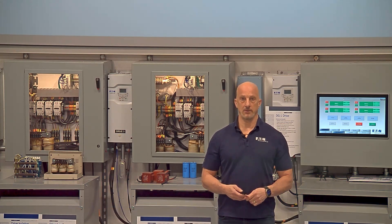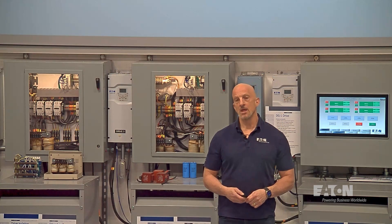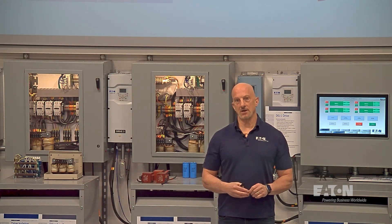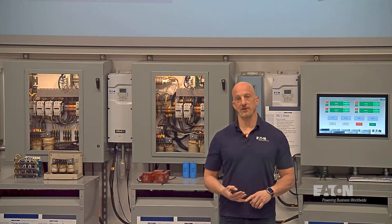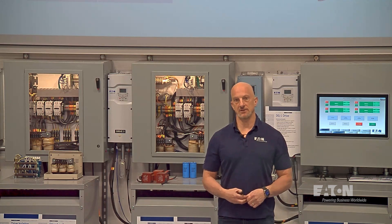One of the questions we get a lot is: how does a delta zigzag transformer eliminate or minimize harmonic currents? To start that conversation, let's talk about positive, negative, and zero-sequence harmonics, which we've talked about in the past when we discussed phase shifting and cancellation of harmonics.